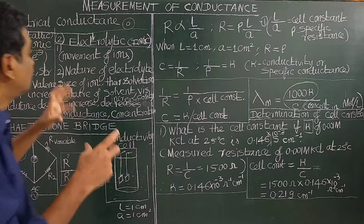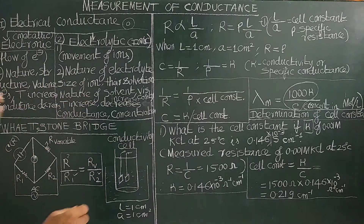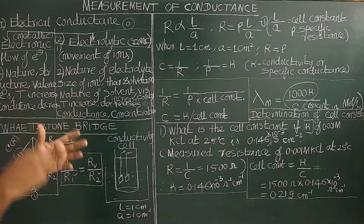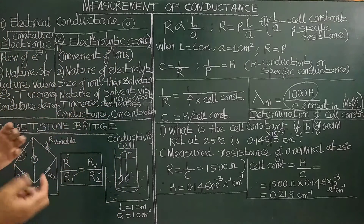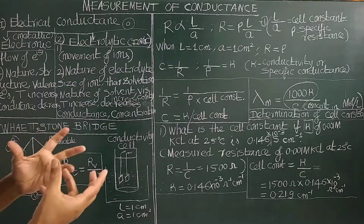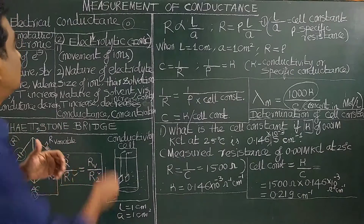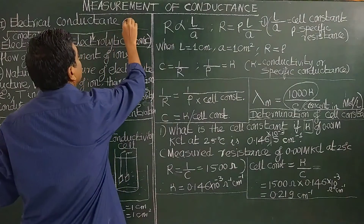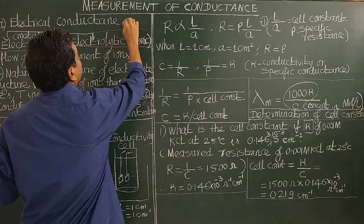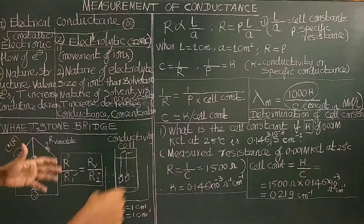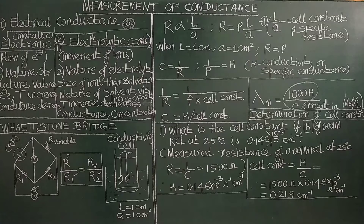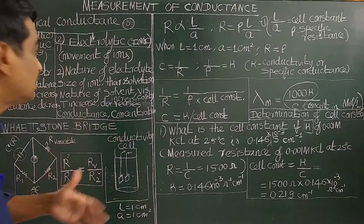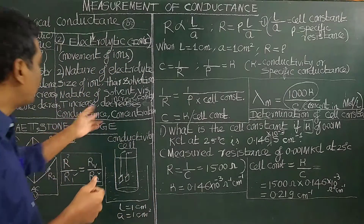Conductance also depends upon the size of the ion and solvation. For example, lithium ion and beryllium ion have high effective nuclear charge, therefore they are heavily hydrated by water or solvent. Therefore their mobility is less, and consequently the conductance is less.